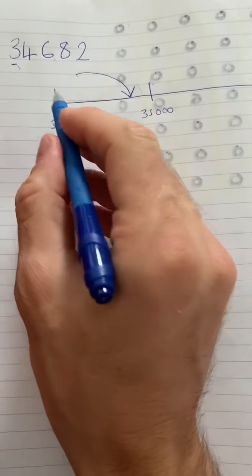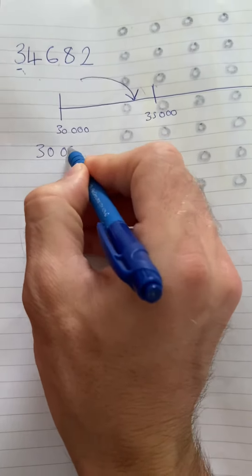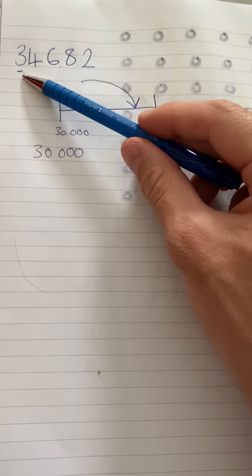So we round down. So this to one significant figure is 30,000. Okay, and that's all you're doing today. Have a look at significant figures.